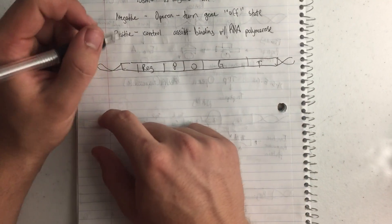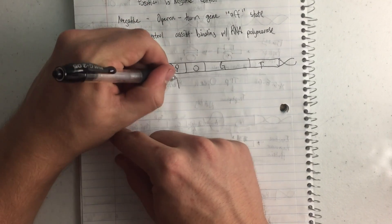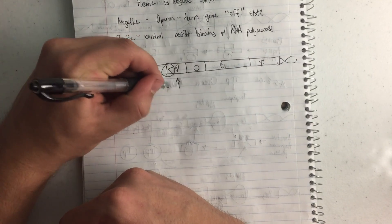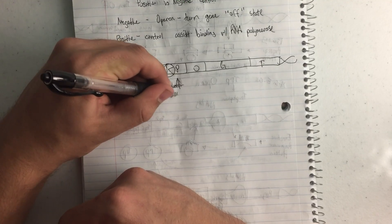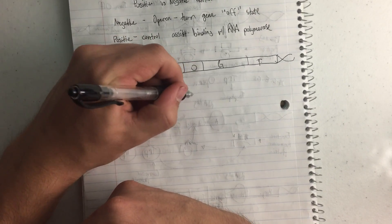And so we have an activator. And what the activator is going to do is, this would be called an activator protein. And all it does is makes it easier for RNA to bind.